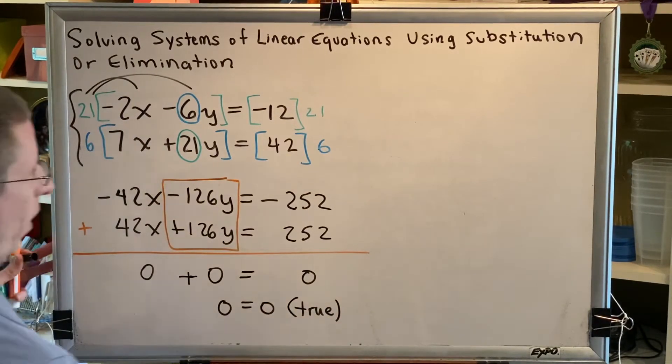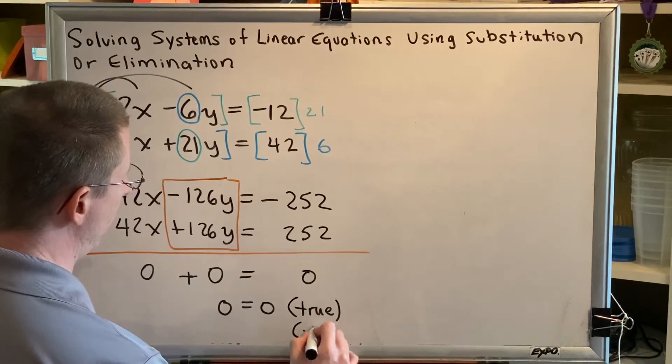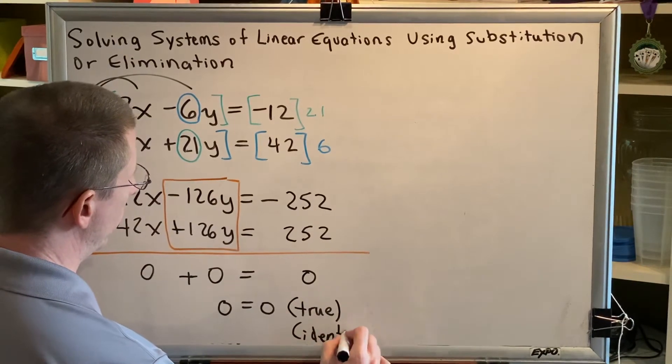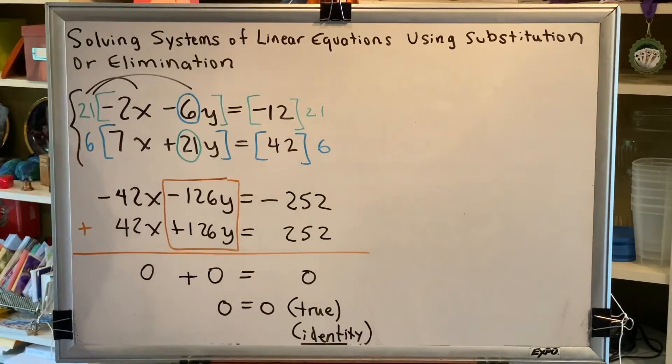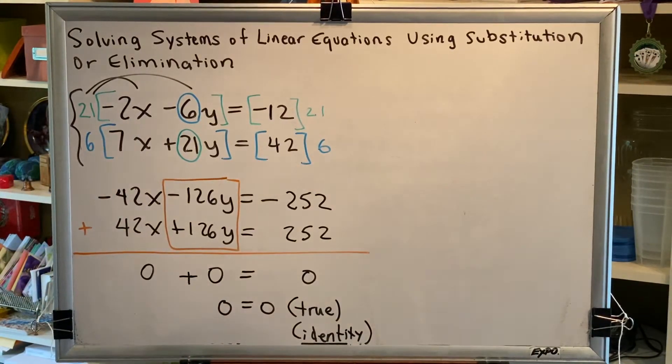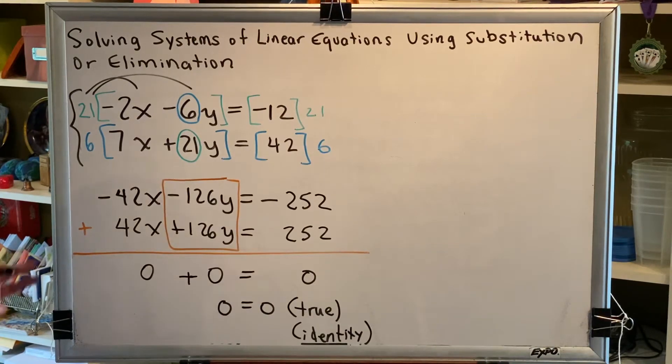What that means is that we're dealing with an identity, a true statement, which means that the two lines must be identical, one sitting right on top of the other. Therefore, the answer to this question is there are an infinite number of points that satisfy both equations at the same time.